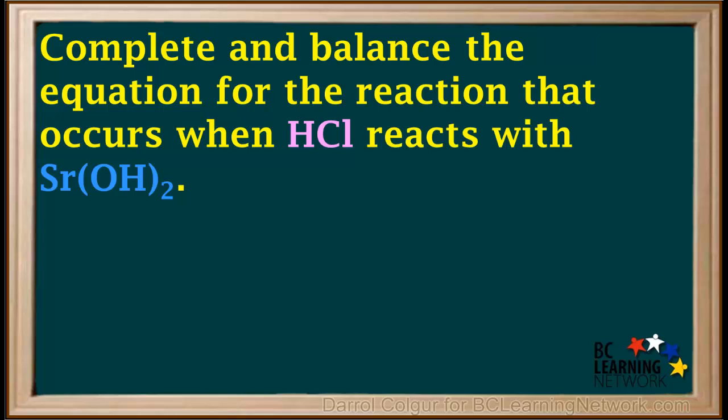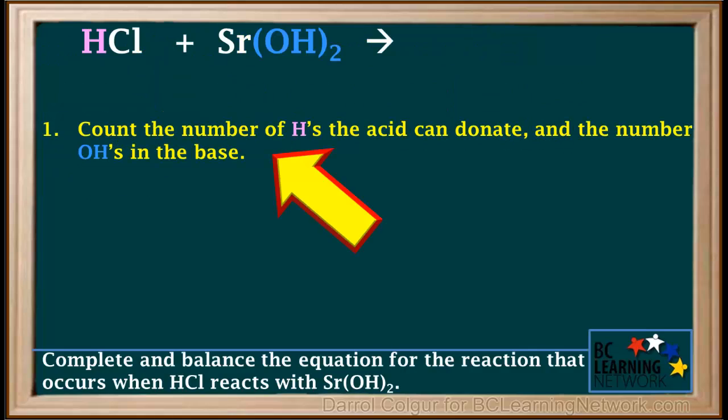We'll outline the steps using an example. Here, we're asked to complete and balance the equation for the reaction that occurs when HCl reacts with Sr(OH)₂. We'll write down the given formulas for the reactants and count the number of H's the acid can donate and the number of OH's in the base.